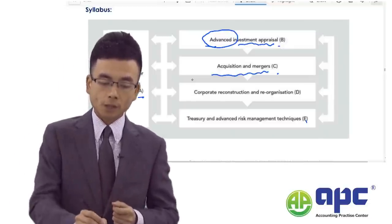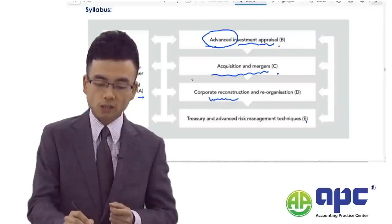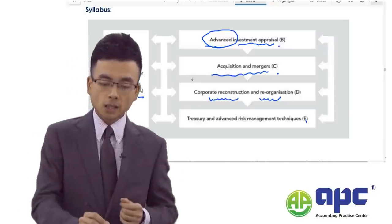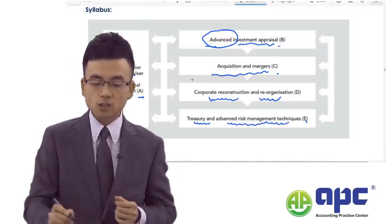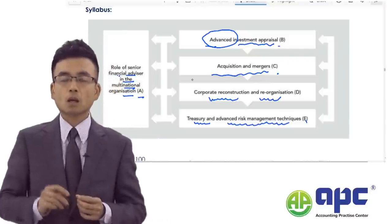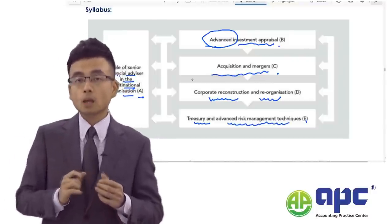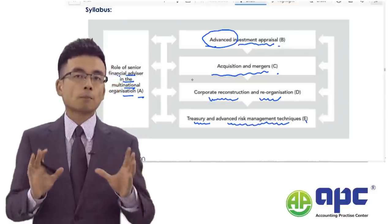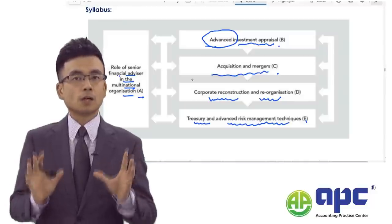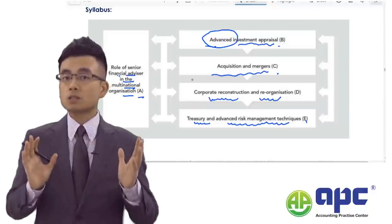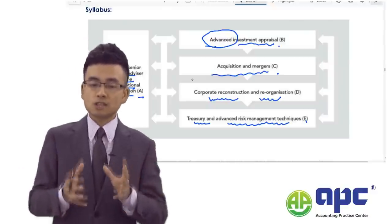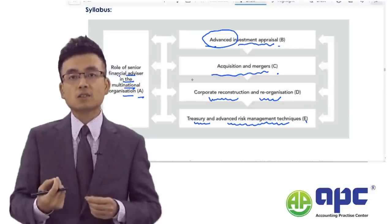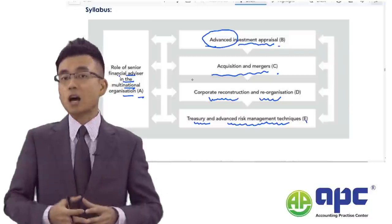Part D covers corporate restructuring and reorganisations to improve business operations. Finally, Part E is treasury and advanced risk management techniques. From a technical point of view it is quite tough, but from an exam perspective it is not that difficult at all, because analysing past AFM exam questions reveals a very consistent style of questions appearing each sitting.